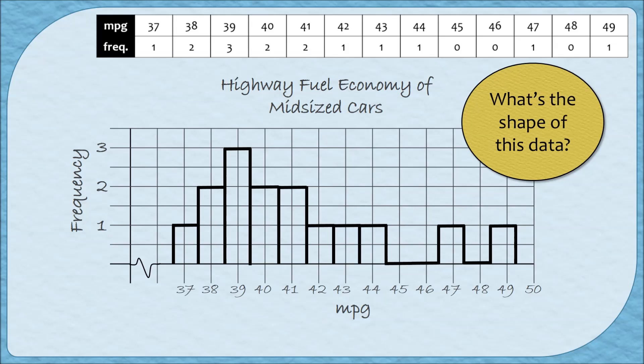Okay, so what I notice about this graph is that the bars, first and foremost, are not all about the same height. They're not all the same height, so we can immediately rule out uniform. Also, there don't seem to be two separate clusters. We don't have two really tall bars with their own little groupings around them, so we can also rule out bimodal.